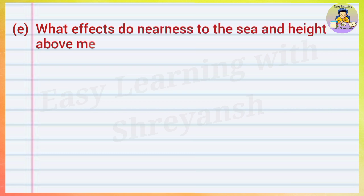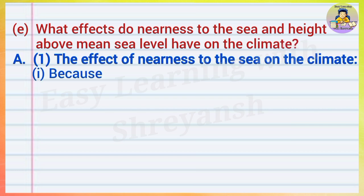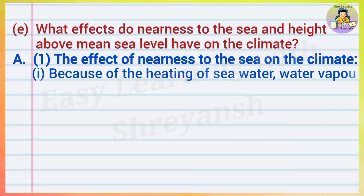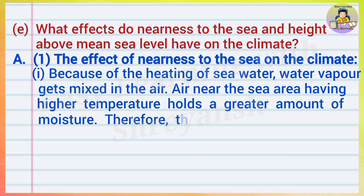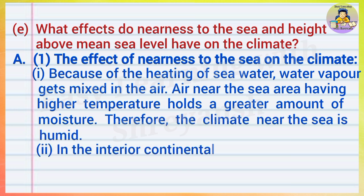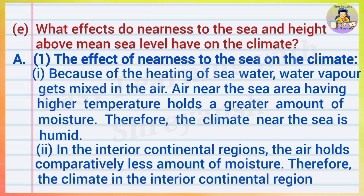(e) What effects do nearness to the sea and height above mean sea level have on the climate? Answer: The effect of nearness to the sea on the climate: Because of the heating of sea water, water vapor gets mixed in the air. Air near the sea area having higher temperature holds a greater amount of moisture. Therefore, the climate near the sea is humid. In the interior continental regions, the air holds comparatively less amount of moisture. Therefore, the climate in the interior continental region is dry.